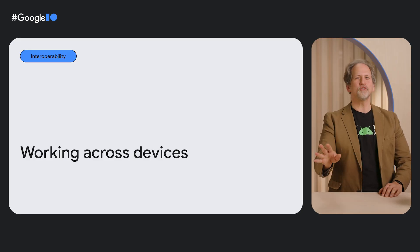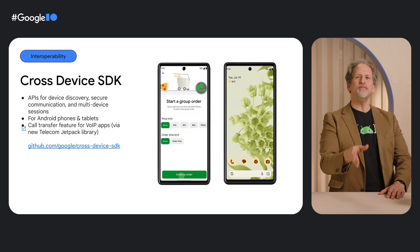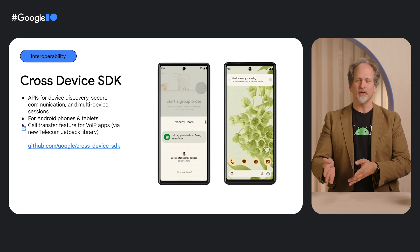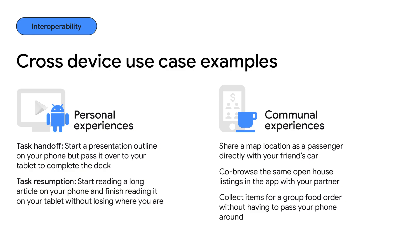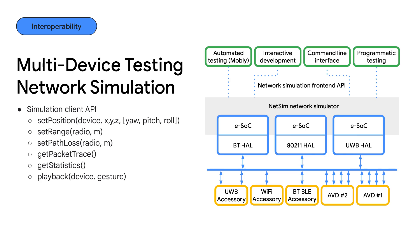There can be magical moments when your devices all work together. The cross-device SDK exits preview this summer, so you can launch cross-device features. You can use the SDK to build personal experiences, like the way the Jetpack Telephony API uses the cross-device SDK to transfer a VOIP call from your phone to a tablet, or communal ones, like placing a group food order or sharing a maps location with your cycling buddies. It abstracts wireless technology such as Bluetooth, Wi-Fi, and ultra-wideband to create sessions that span devices. We're building a network simulator to help test your cross-device creation, which includes features such as changes in device position and packet loss.